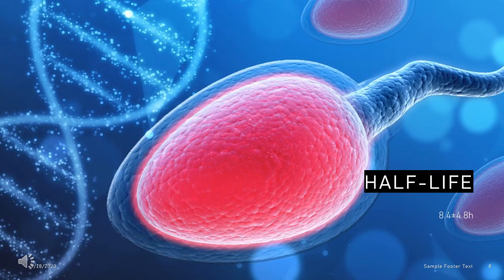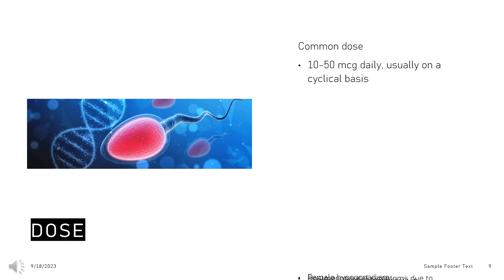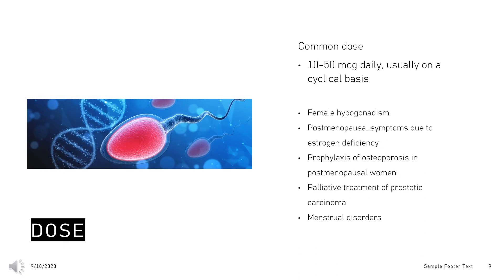Half-life: A 30 mcg oral dose has a half-life of 8.4 ± 4.8 hours, and a 1.2 mg topical dose has a half-life of 27.7 ± 34.2 hours. Dose — Female hypogonadism, Adult: 10–50 mcg daily, usually on a cyclical basis. Initial estrogen therapy should be followed by a combined estrogen and progestogen therapy.